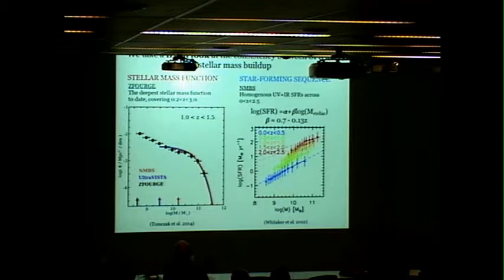We take a fresh look at the consistency between the star formation rate sequence and stellar mass buildup using two data sets. The stellar mass function from the Zforge survey, which includes Candles data. It's the deepest stellar mass function available, covering locally all the way to redshift 3. I also use the star forming sequence from Whitaker et al. 2012 with homogeneous UV plus IR star formation rates.